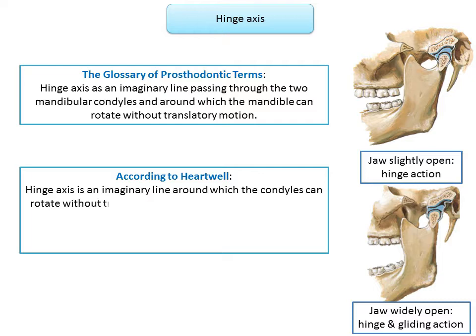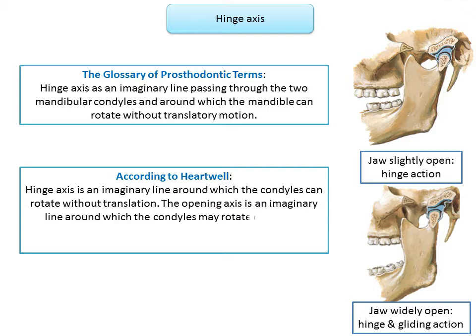The opening axis is an imaginary line around which the condyles may rotate during the opening and closing movements of the mandible. It is called imaginary because any three-dimensional object that moves in a coordinated rotational path of motion has an axis of rotation. A three-dimensional object like the TMJ, if it moves in a coordinated rotation path — part of a circle or ellipse — has an axis of rotation.